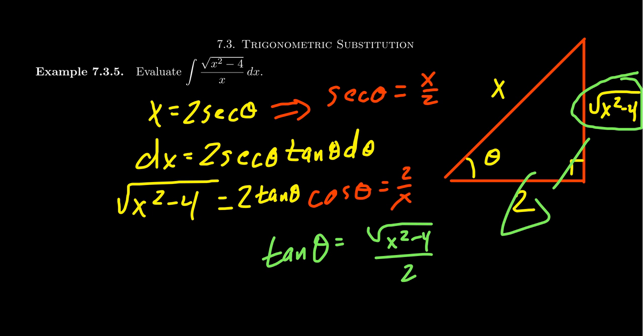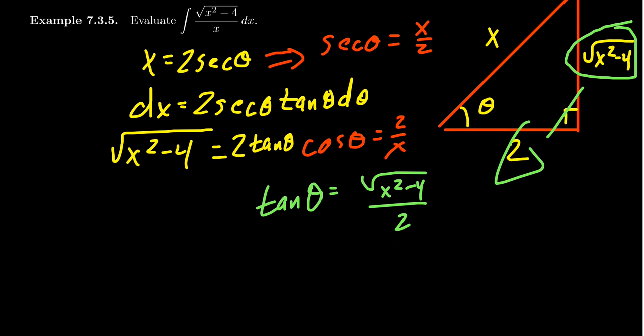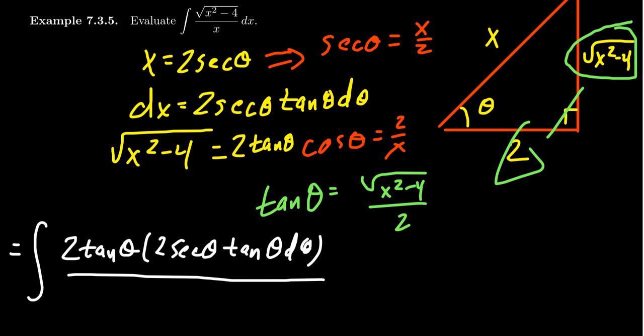So sort of a rule of thumb is the reason we choose the substitutions we do is that whatever you set x to equal, the square root will equal the best friend of that function. So sine and cosines are best friends, tangent and secant are best friends as well. One could do a cotangent or cosecant, but that just complicates things with negative signs that we don't need. So using this substitution, let's translate the integral into the language of theta, the square root on top is going to become a 2 tangent. Don't forget about the dx because that translates as well, you're going to get a 2 secant theta tangent theta d theta. And then this sits above x, which x is 2 secant.